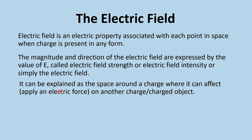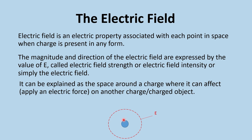A simpler way to define the electric field: it is the space around a charge where it can affect or apply an electric force — an attraction or a repulsion — on another charge or charged object. If you have a charge at a point within this field, it will be either repelled or attracted depending on polarity. If it is out of the field, there will be no effect and no force acting on it.